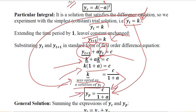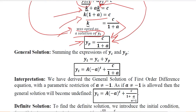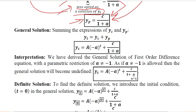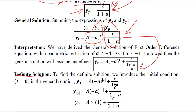By summing y_c and y_p we arrive at the general solution. However, there is a caveat: in this formula a should not equal minus 1, because if it becomes minus 1 the denominator becomes 0 — that is, 1 minus 1 equals 0 — and this term becomes undefined, which is something we don't want, especially in economic analysis.